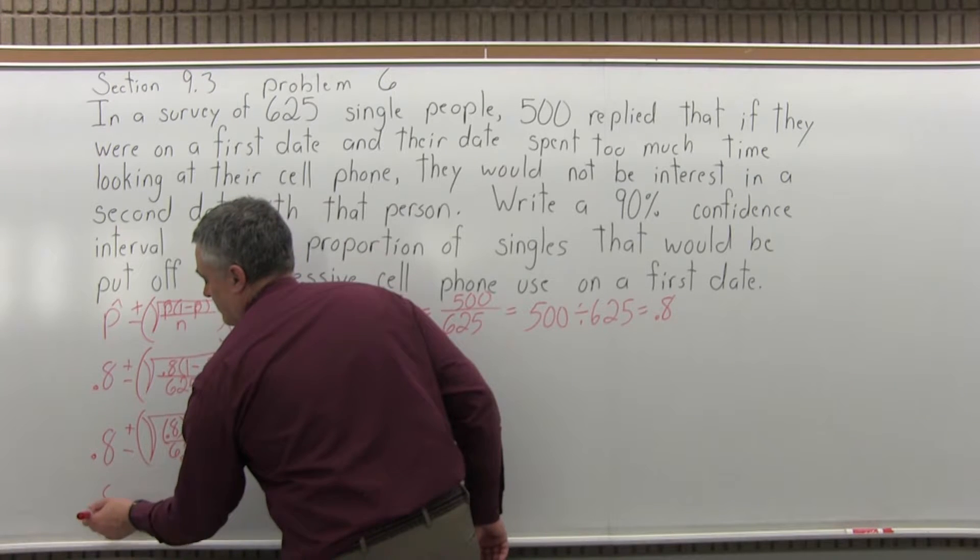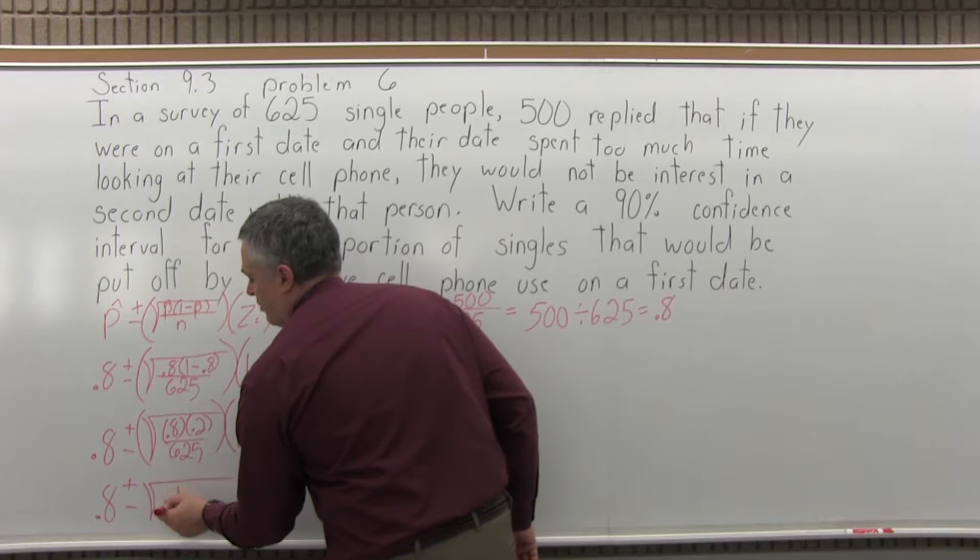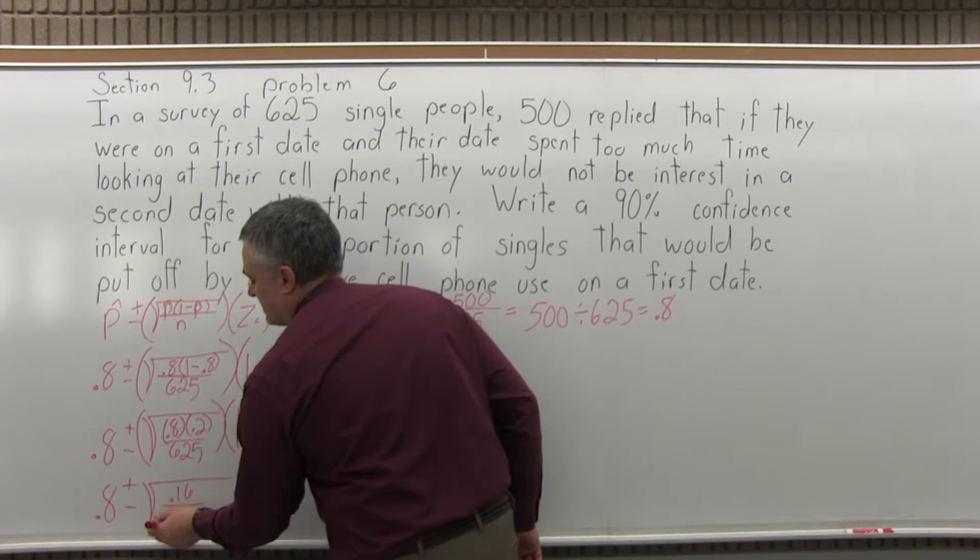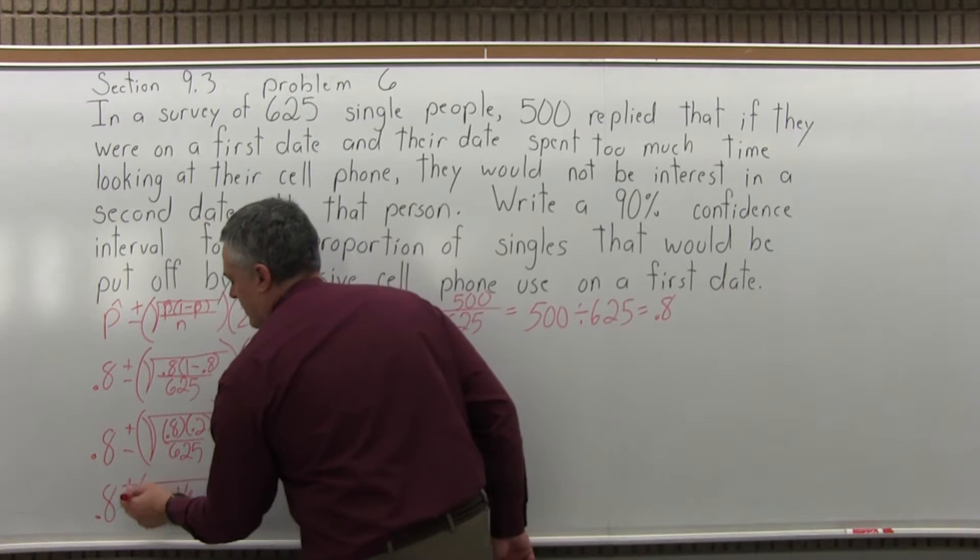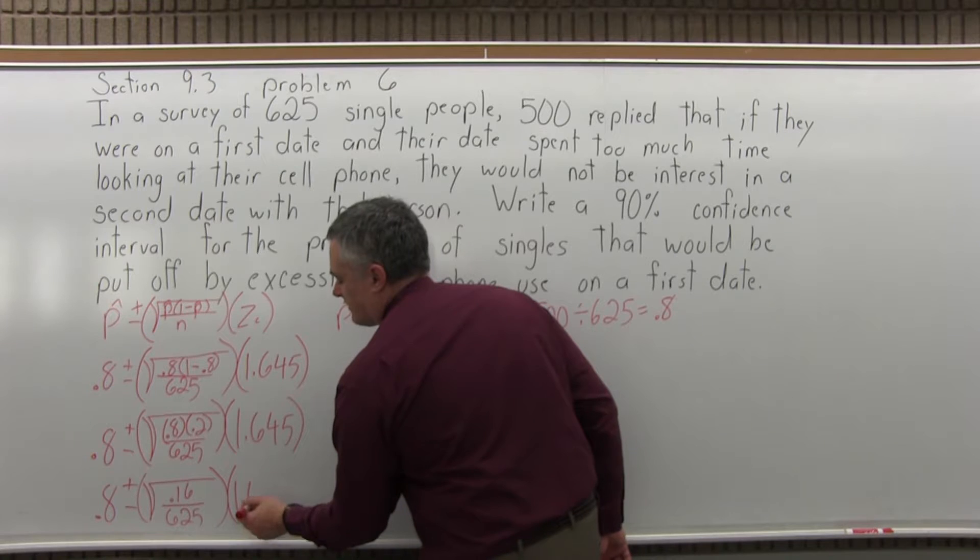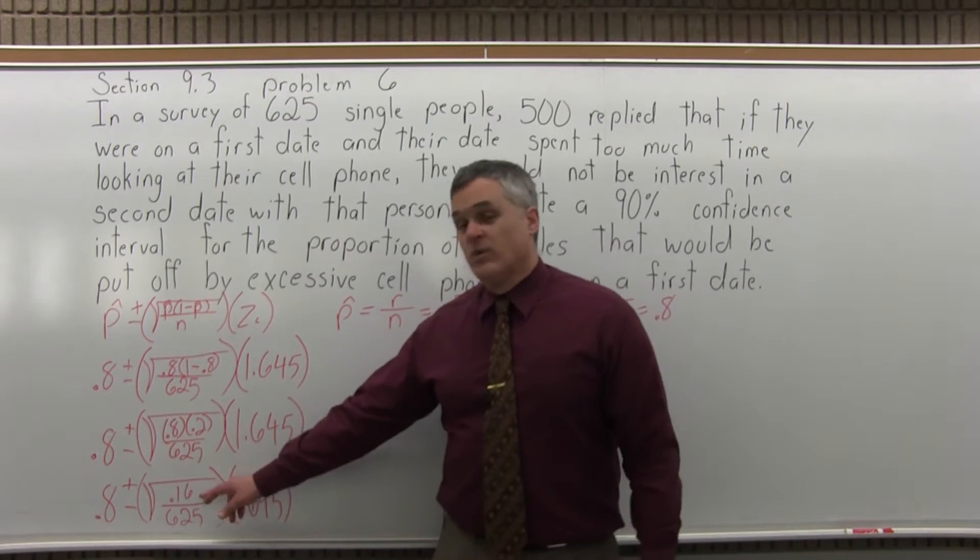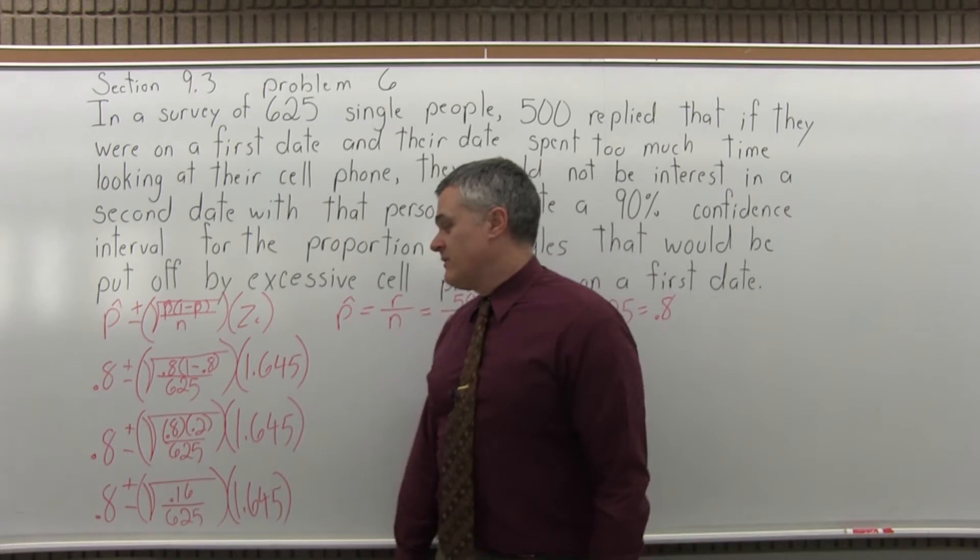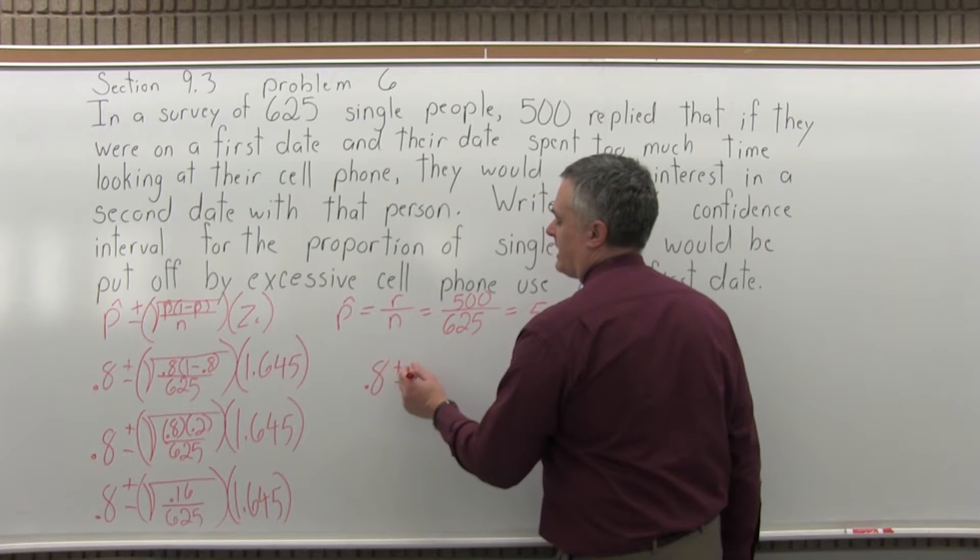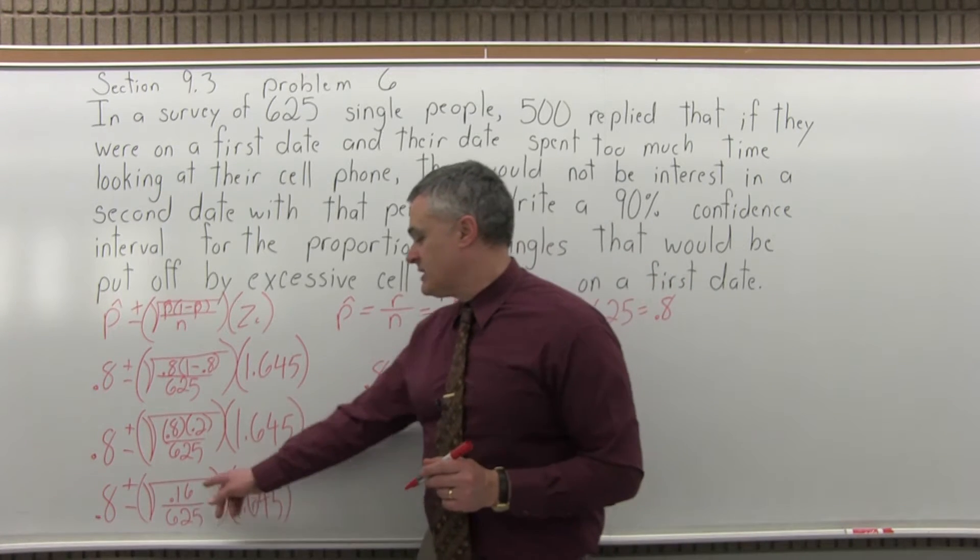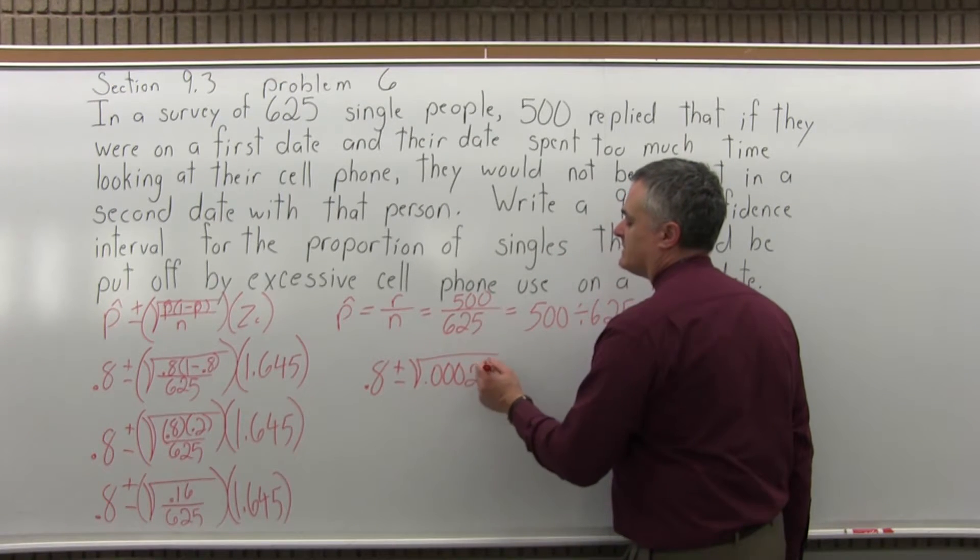So I'll have 0.8, plus or minus the square root of 0.16, over 625, times the z sub c value on the end, 1.645. Now I can divide 0.16, divided by 625, so that'll be my next step. So I'll have 0.8, plus or minus. So under the square root, when I do the division, 0.16, divided by 625, it comes out to 0.000256.